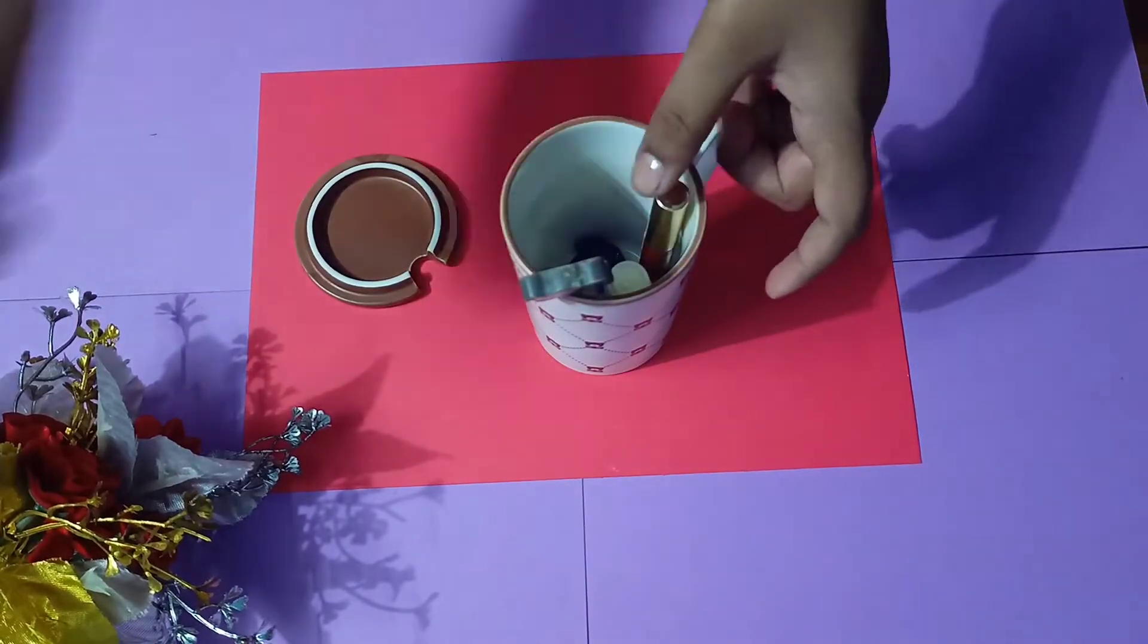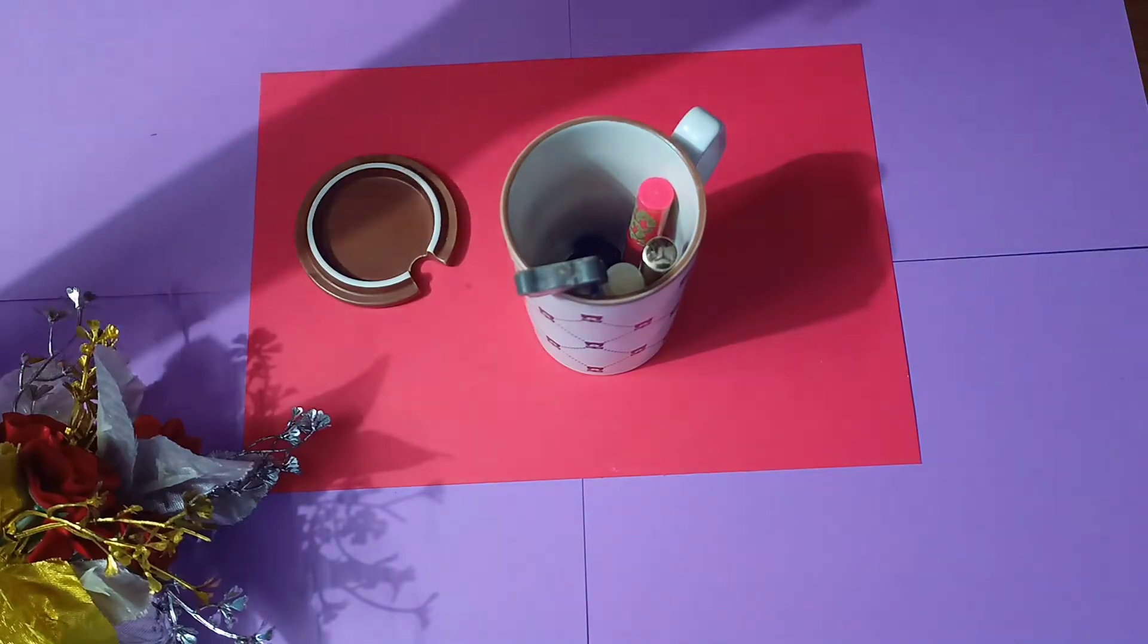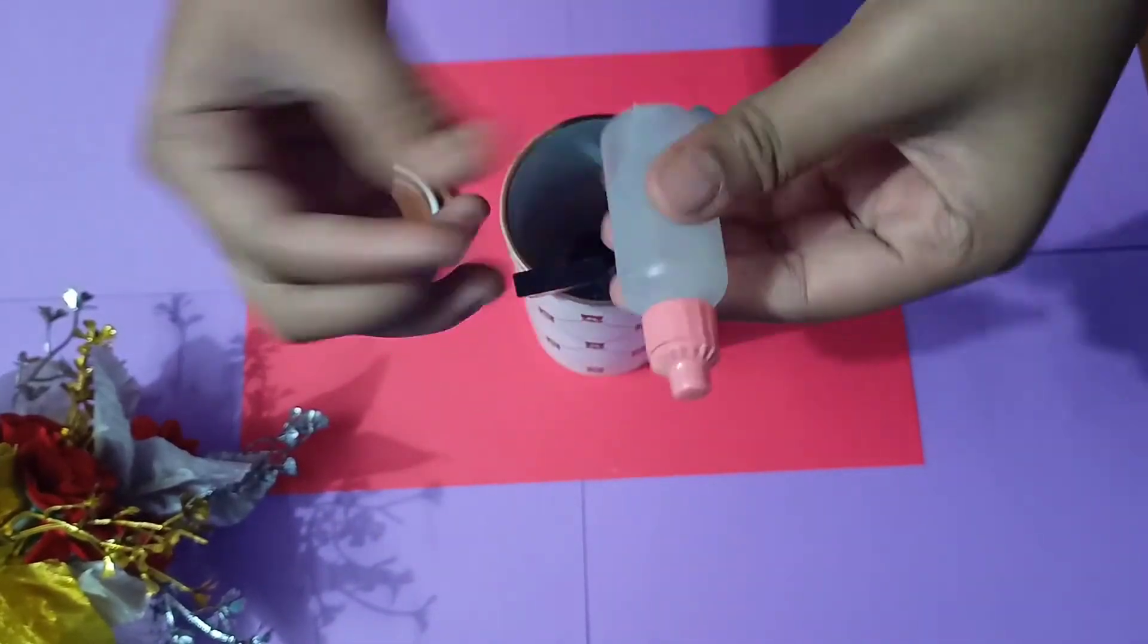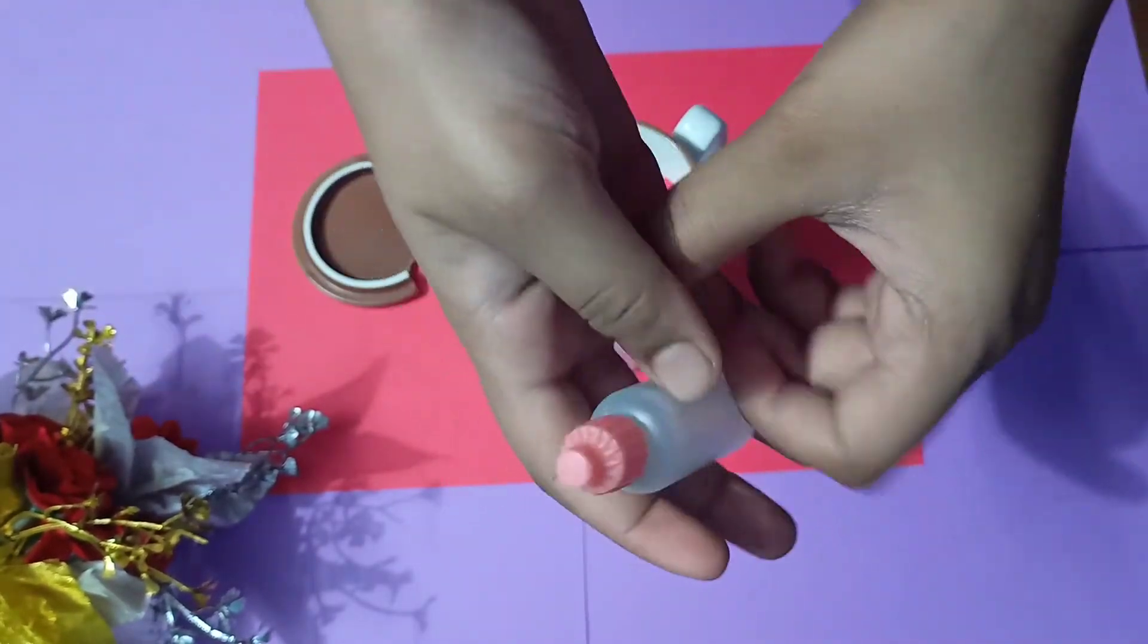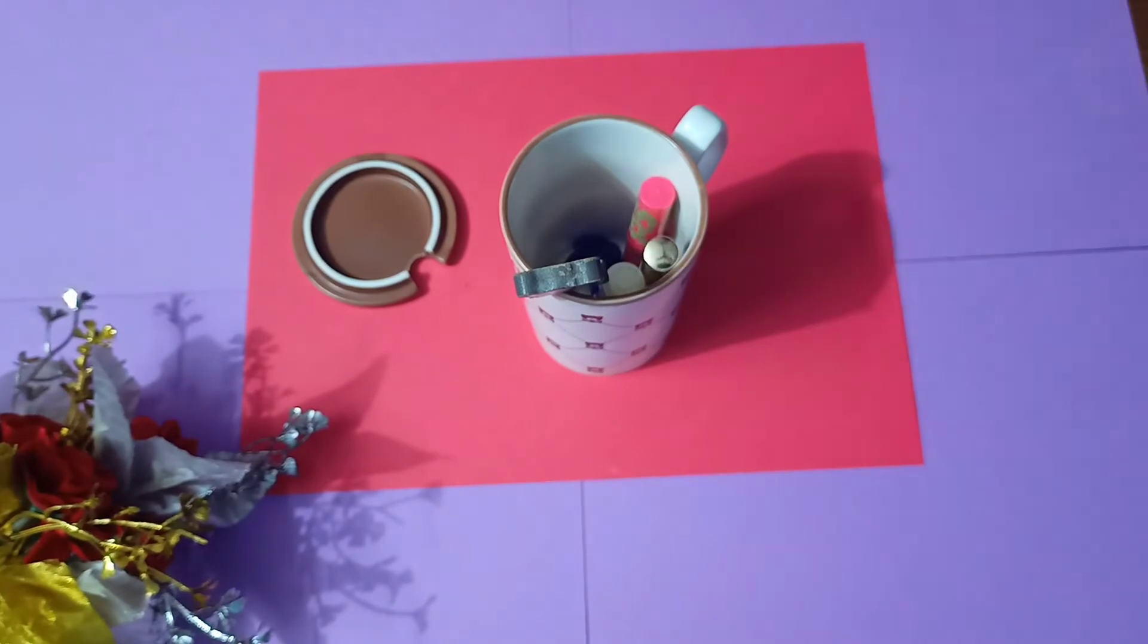Then I've added a lip balm—it's not lipstick, it's lip balm—and gulab gel. If she has eye itching problems, this gulab gel comes in a small dropper packaging so it's easy to use.